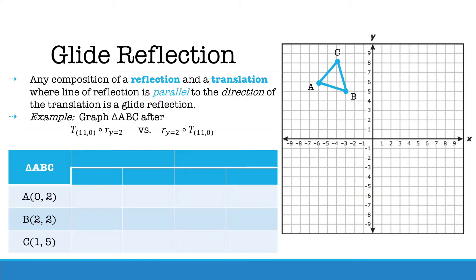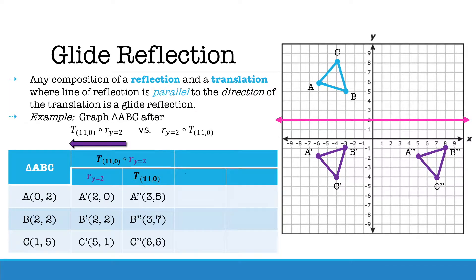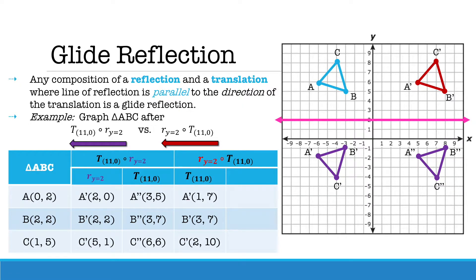Here we have triangle ABC. We are going to compare it when performing a translation of (11, 0) follows a reflection over the line y equals 2, versus a reflection over the line y equals 2 follows the translation of (11, 0). When performing the reflection first, we graph the line y equals 2, reflect triangle ABC over the line, then translate 11 units to the right to get triangle ABC double prime. If we reverse the order and perform the translation first, then the reflection, the double prime image lands in the same position, therefore showing that for glide reflections these are commutative.